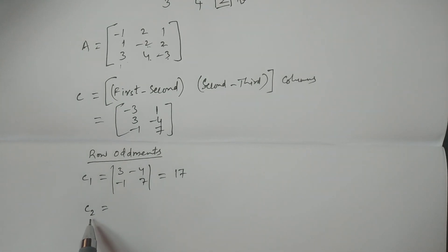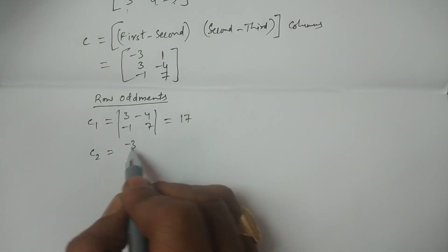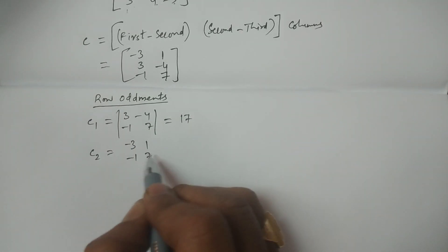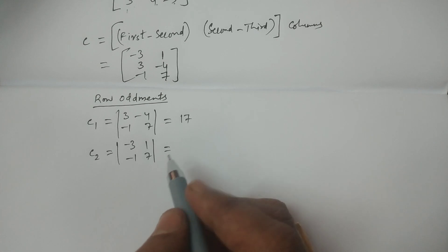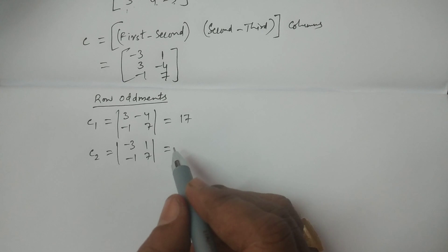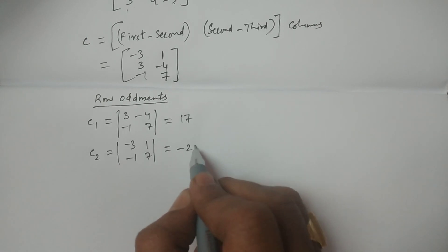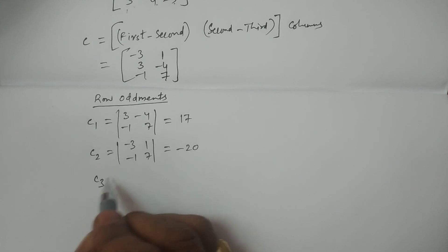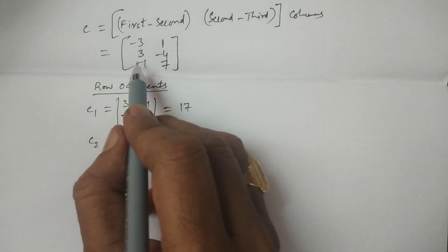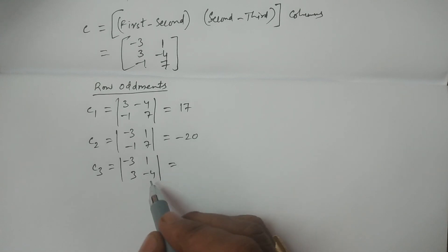Similarly, c2 is obtained by deleting the second row — remaining values are minus three, one, minus one, seven — determinant gives minus 21 plus one, hence minus 20. And c3 by deleting the third row — remaining values are minus three, one, three, minus four — determinant: four times three are twelve, minus three gives nine.